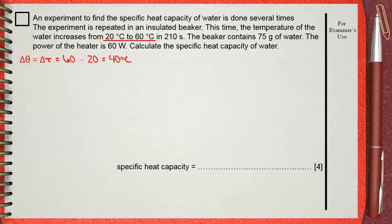Let's see the second given. 210 seconds. Of course, this is time. We also have 75 grams, which is the mass. And finally, you have 60 watts, which represents the power P.